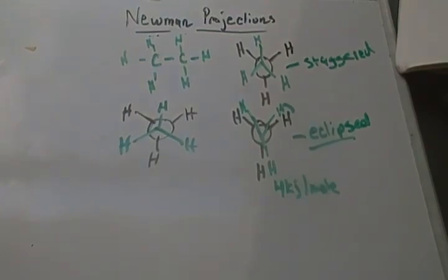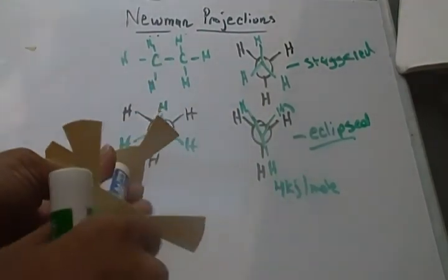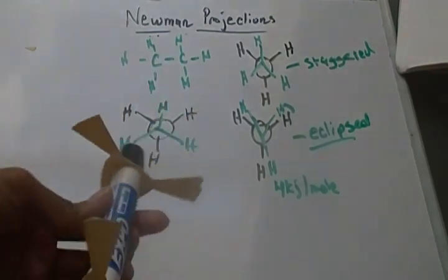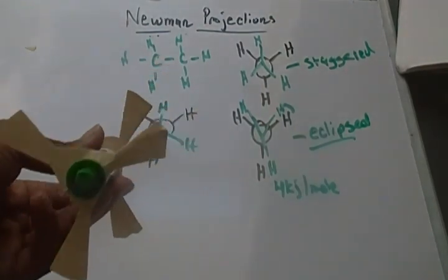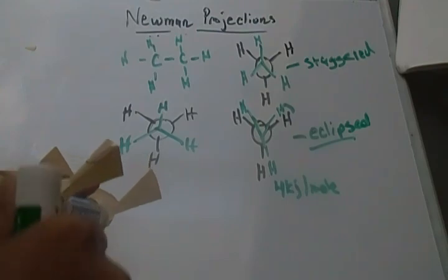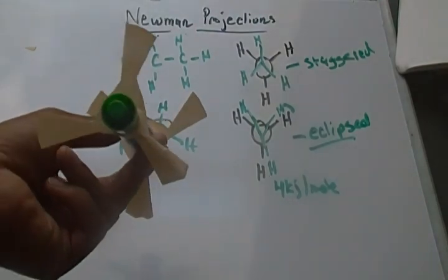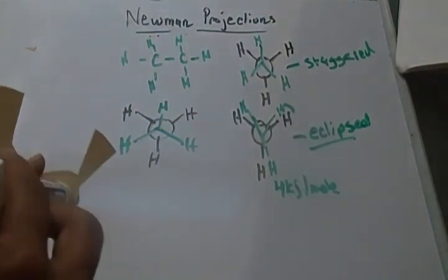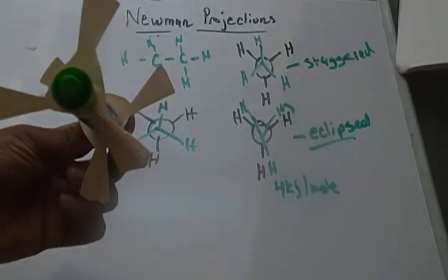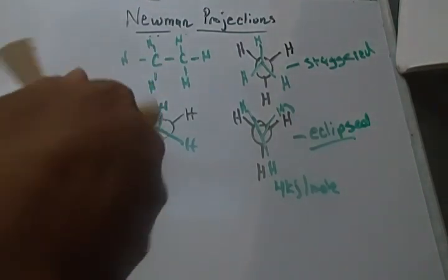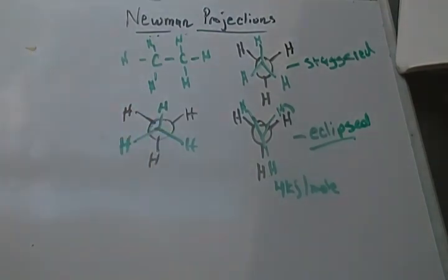That's really all Newman projections do. They're just a way of depicting different energy states. Because with a single bond, there's rotation about the bond, and we just want to depict which way you'll see it mostly in nature. They're always flipping and turning, so you can't really isolate any single one.